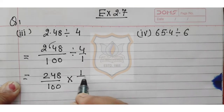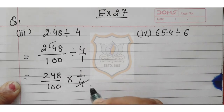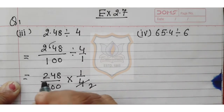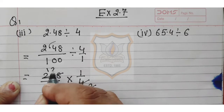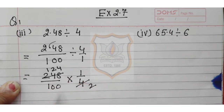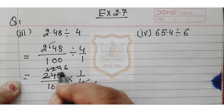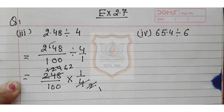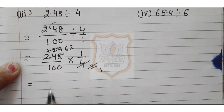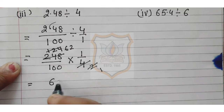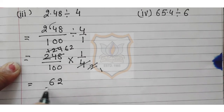That equals 248 upon 100, multiplied by 1 upon 4. Computing the numerator: 2 twos are 4, 2 ones are 2, 2 twos are 4, 2 fours are 8, and continuing, 2 ones are 2, 2 sixes are 12, 2 twos are 4. The answer in the numerator is 62.